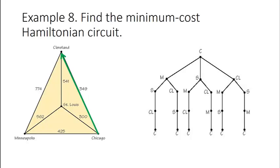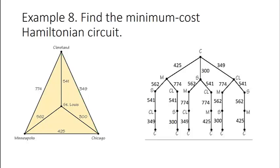On this graph, that's called a tree. On this graph we're going to then add in all of the weights. For example, you see the distance from Chicago to Minneapolis on our graph is 425, so we mark that edge as 425. From Chicago to St. Louis the distance is 300. From Chicago to Cleveland the distance is 349. We continue adding those weights to every single little edge of our tree.